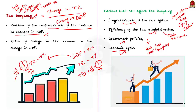The fourth important factor is the economic cycle. The economic cycle refers to regular fluctuations in economic activity such as booms and recessions. Tax buoyancy will be higher during boom years than during recession years, because during boom years people tend to earn more money and will pay more tax.